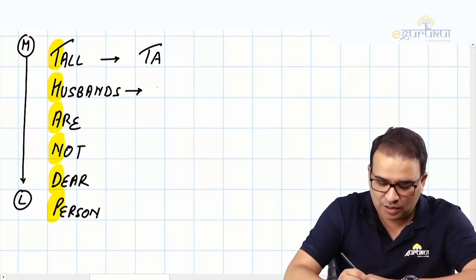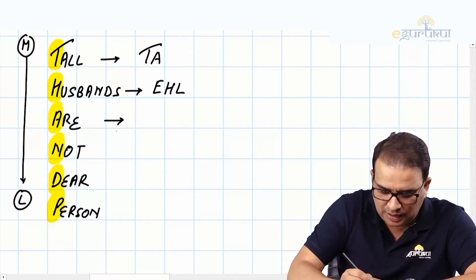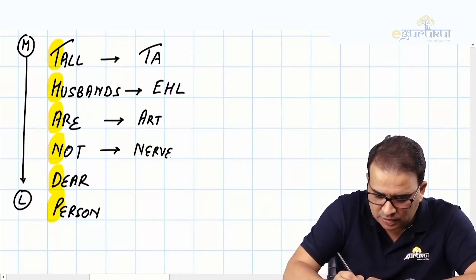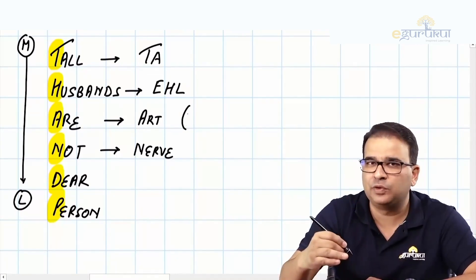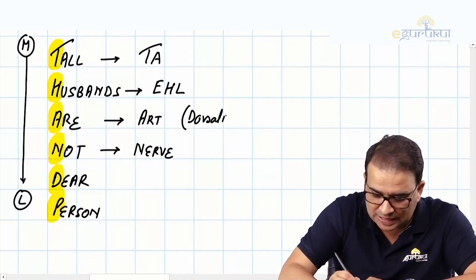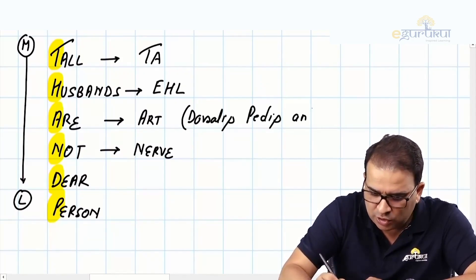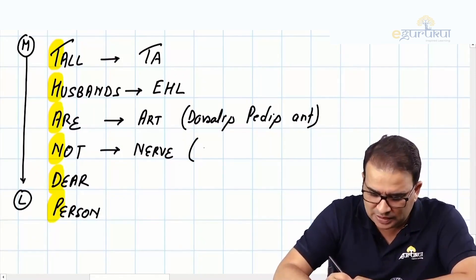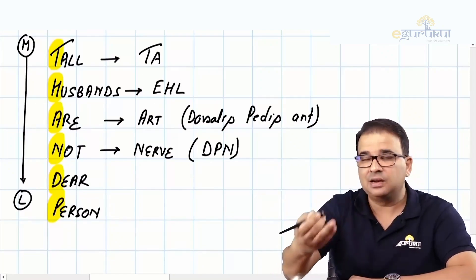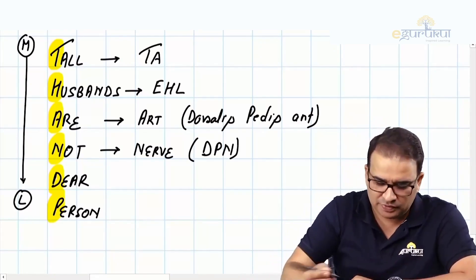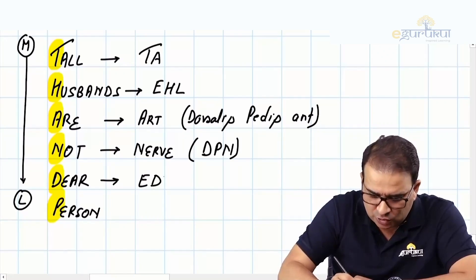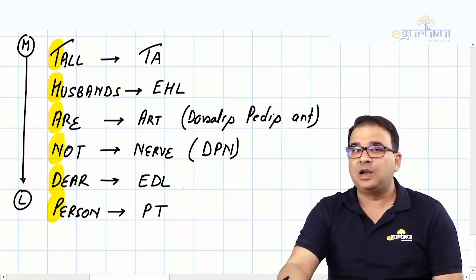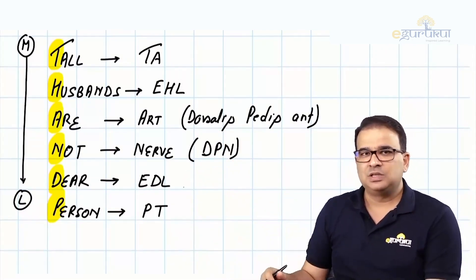H is for extensor hallucis longus. A and N are again artery and nerve. The artery expected on the dorsum of the foot is the dorsalis pedis artery, which is the continuation of the anterior tibial artery. The nerve is the deep peroneal nerve, which supplies the anterior compartment of the leg. D is for extensor digitorum longus, and P is for peroneus tertius.